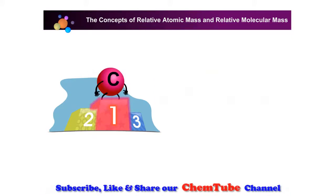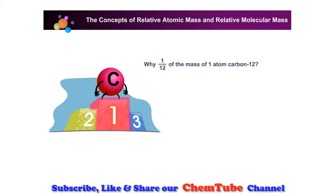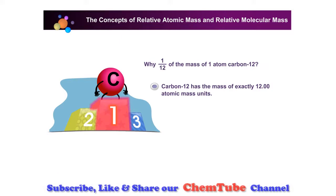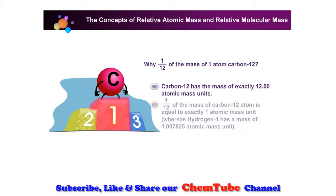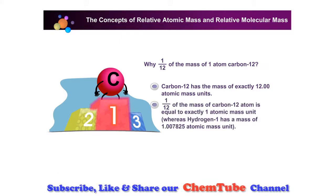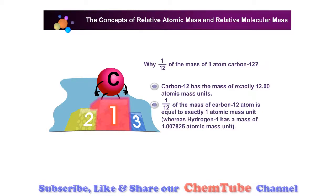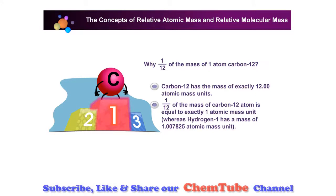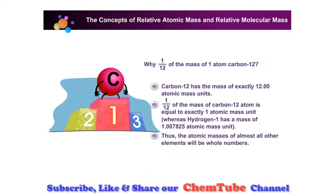In 1961, the International Union of Chemists and Physicists agreed to choose carbon-12 as the new standard. One-twelfth of the mass of one atom of carbon-12 has the mass of exactly 12.00 atomic mass units. One-twelfth of the mass of a carbon-12 atom is equal to exactly one atomic mass unit, whereas hydrogen-1 has the mass of 1.007825 atomic mass units. Thus the atomic masses of almost all other elements relative to carbon-12 will be whole numbers.